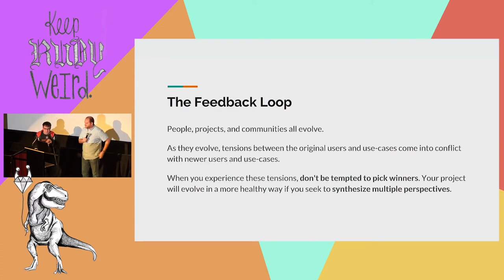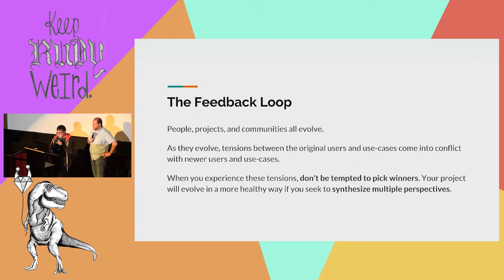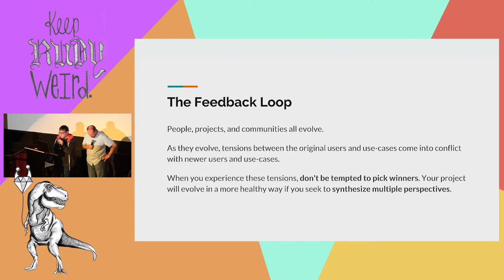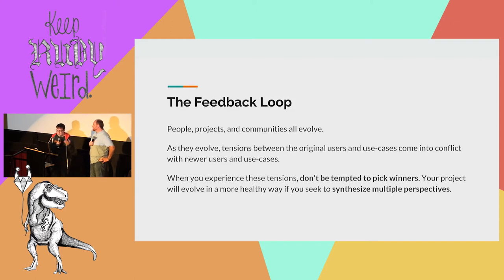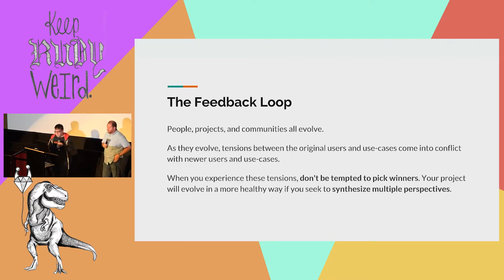Dave talked about a conflict between what people expect the world to look like and what it looks like in the real world. When we talk about the feedback loop in this talk, what we're saying is in the real world, people, communities, and projects all evolve. They grow into things that are different than where they were when they started. As they evolve, there are tensions between the people who started out, the first users, the first use cases that something was designed for, and the newer users, the newer use cases.